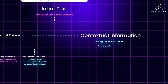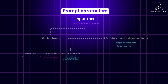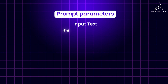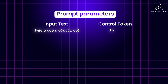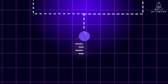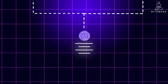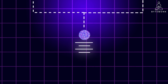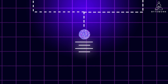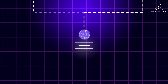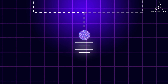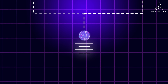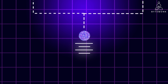Contextual information can also include conversation history. For example, consider a prompt where the input text is 'Write a poem about a cat.' If you also provide a control token — 'rhyme' — the prompt instructs the LLM to generate a poem about a cat, and additionally the control token specifies the poem should use rhyming words. The LLM would then leverage its knowledge of language patterns and rhyming schemes to create an output that fulfills both requirements.